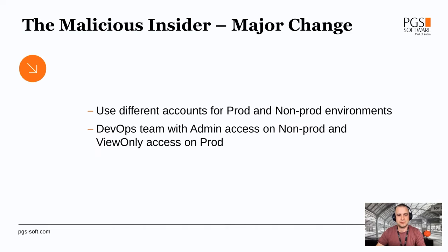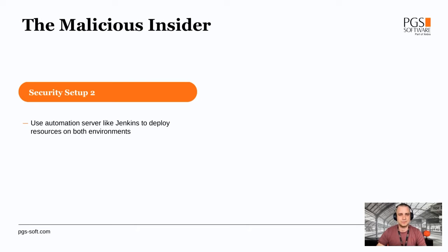Then we can go for a bigger change: let's separate our environments. First, separate prod and non-prod environments, then change the access model. The DevOps or development team can still have admin access on the non-prod environment, but for production they get at most view-only access — they can see that an object exists, but they cannot see the contents of that object.